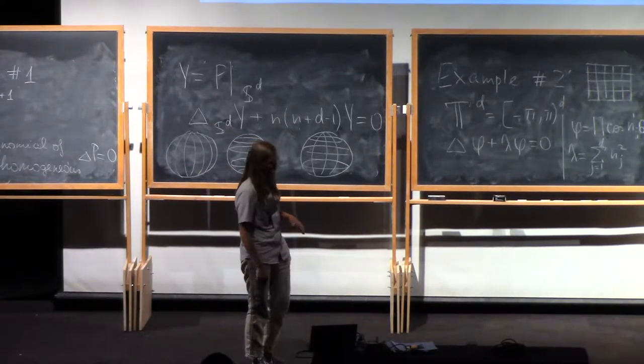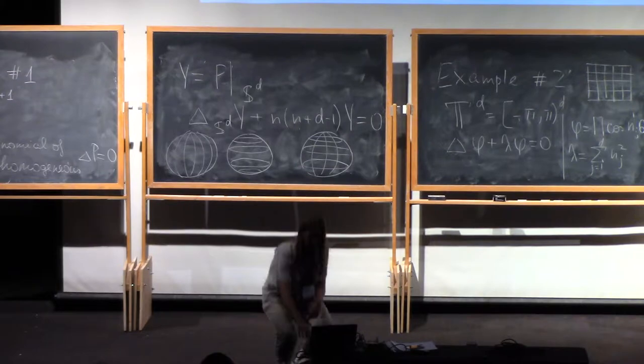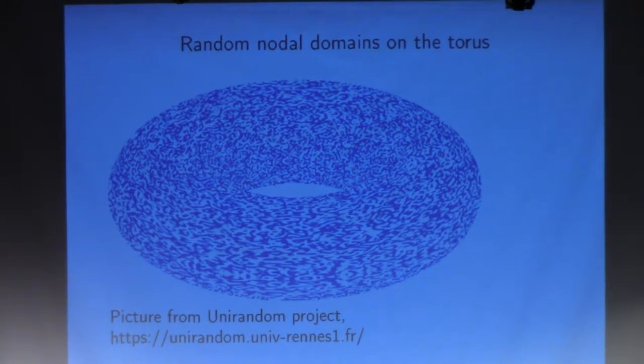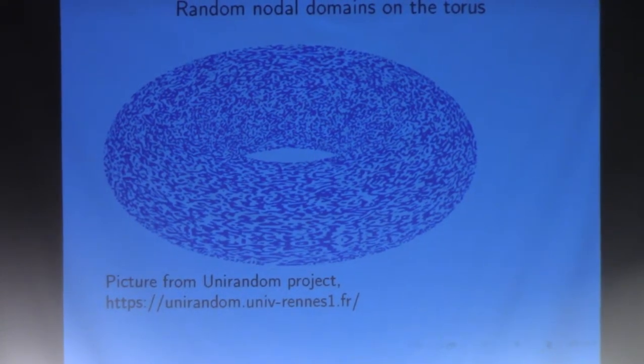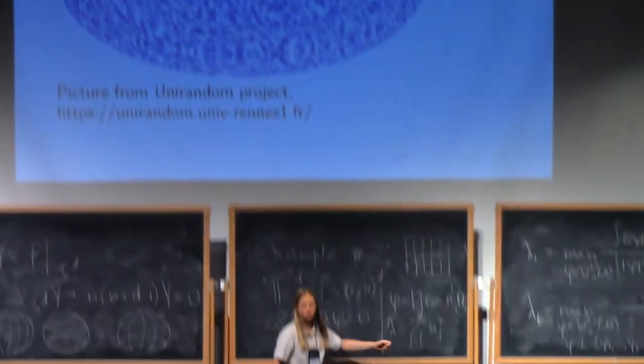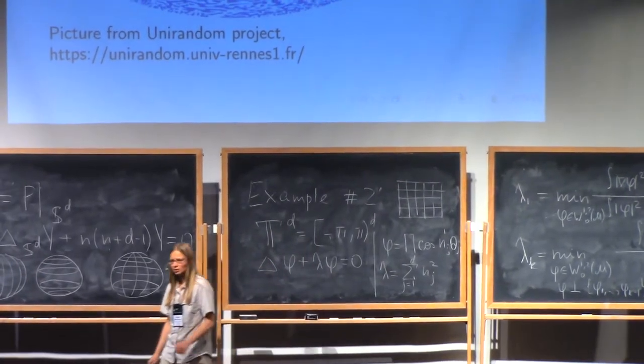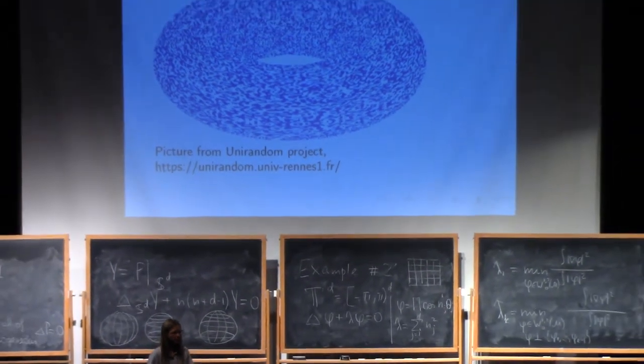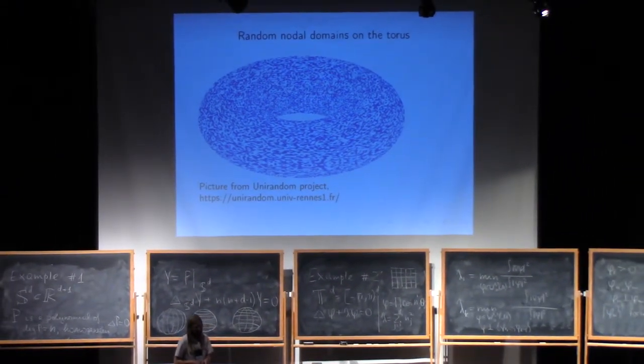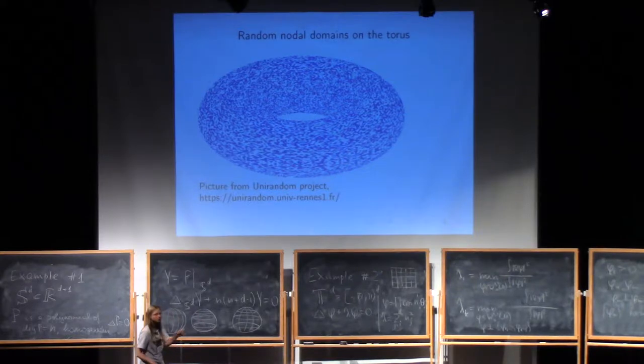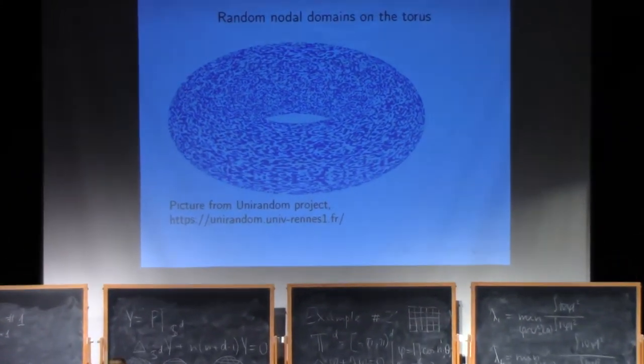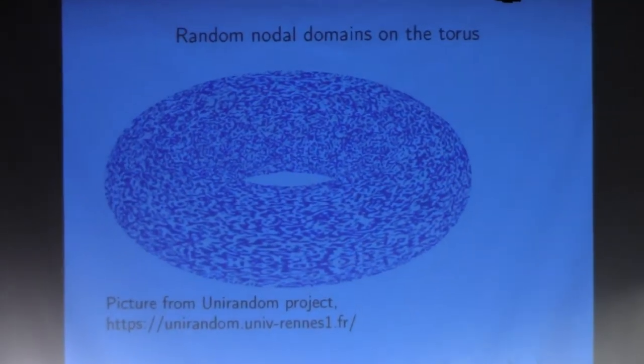If on the torus you go to a really high frequency and look what happens there when you take random combination of these cosines, you will see a picture like that. It's blue where the function is negative, white where it's positive. So there are lots of lines in between where the function is zero, and they're not like that at all.